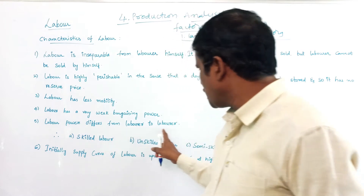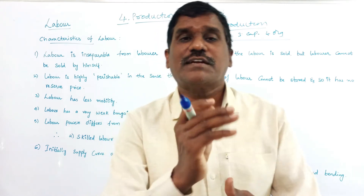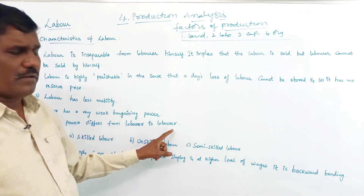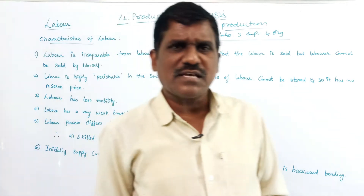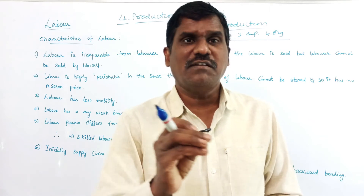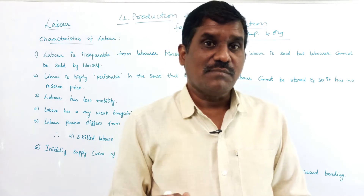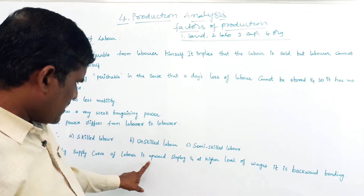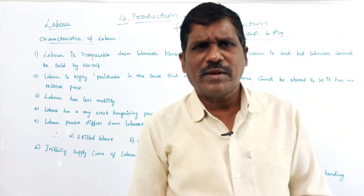Fifth, labor power is different from labor to labor — all labor skills are not equal. The labors are divided into three parts: skilled labor, unskilled labor, and semi-skilled labor. Semi-skilled labor knows something. And next, initially the supply curve of labor is upward sloping, and at a higher level of wages it becomes a backward-bending supply curve — a different concept I will discuss later.